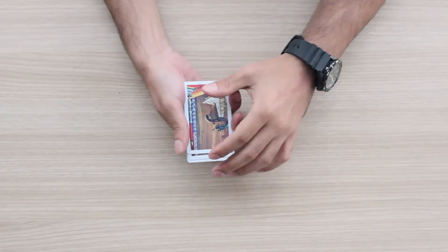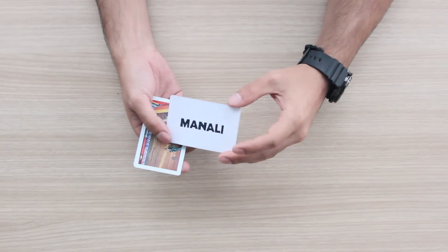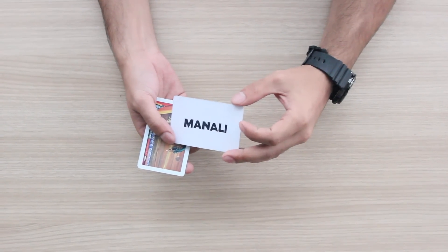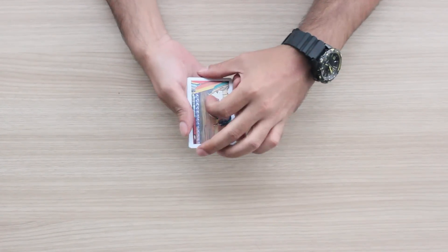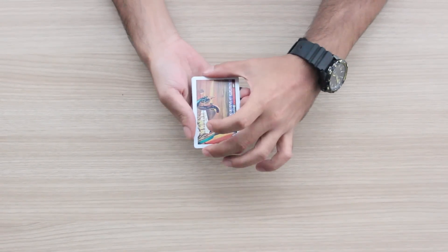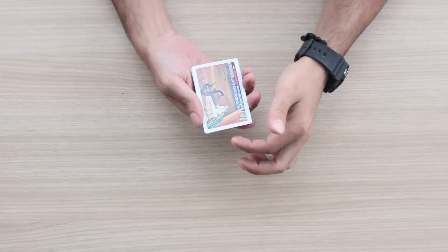He then opens the Manali card, looks at me and asks, is this the place you really want to go? I said yes. He says all you have to do is keep an eye on that card while putting it at the bottom. I said that's easy, the Manali card is at the bottom.